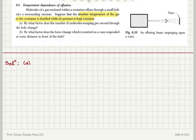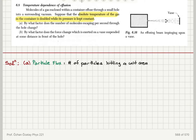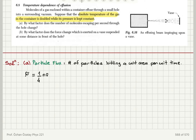We know the particle flux, which is defined as the number of particles hitting a unit area per unit time. We have two versions of this particle flux. In our elementary discussion it was (1/6)n·v̄, but using the Maxwell velocity distribution and spherical distribution of velocities, the correct formula for the particle flux is (1/4)n·v̄.